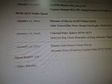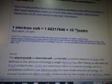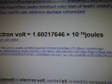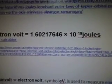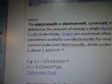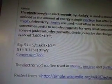And January 13th — it looks like I started this back in January, that's when I first started blogging about the whole thing. So, one electron volt equals 1.60217646 times 10 to the minus 19 joules. The electron volt is used to measure energy — we already read all that before.